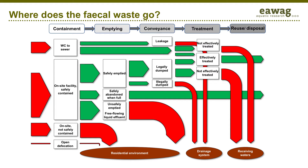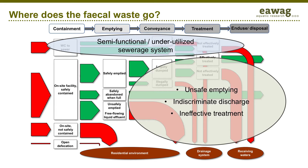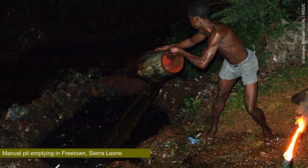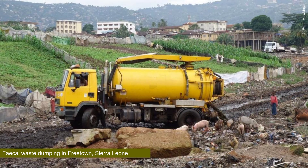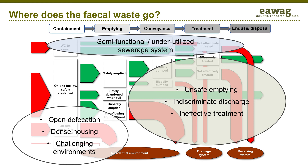The major challenges typically highlighted by an SFD fall into three main areas: poorly functioning sewerage systems and low connection rates; inadequate fecal sludge management from unhygienic toilets, to unsafe emptying, to open dumping, to ineffective treatment, as shown in these photos. The third major challenge is open defecation and unsafe toilets in high-density and low-income areas or challenging environments, which are often occupied by informal settlements.